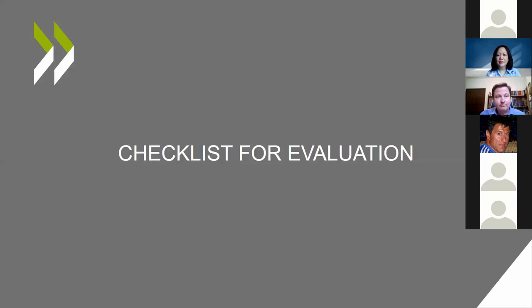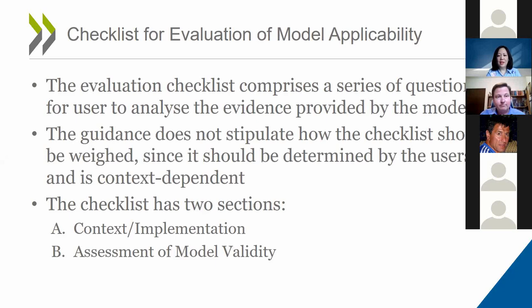The OECD guidance provides a checklist for model users to analyze the information provided by the modelers. The checklist has different questions to ask, but it does not have a weighing system to tell the user which element is more important. The weight assigned to each element should be determined by the user, based on the context and purpose of the model. The checklist can be separated into two parts: the first half is about the context and implementation of the model, and the second half focuses on the assessment of model validity.